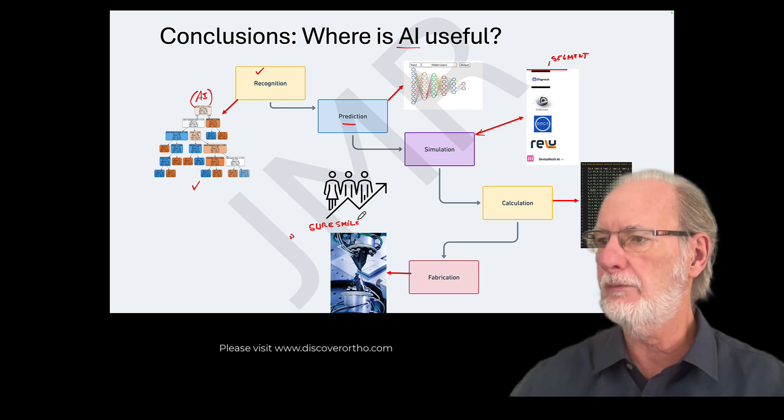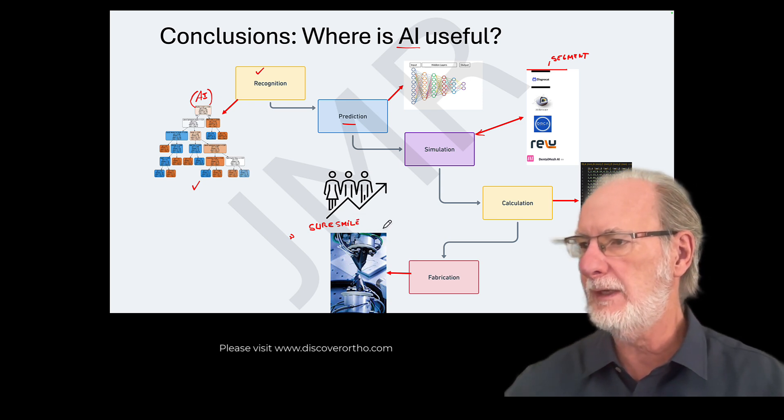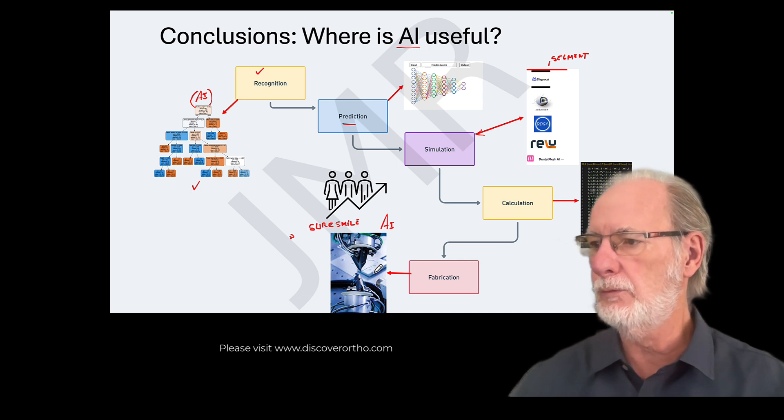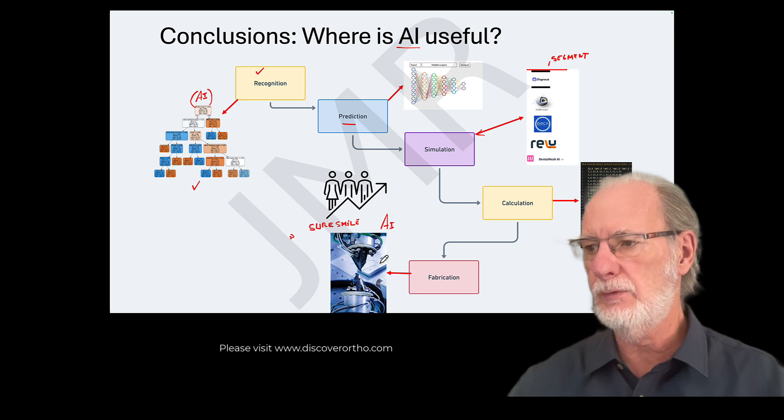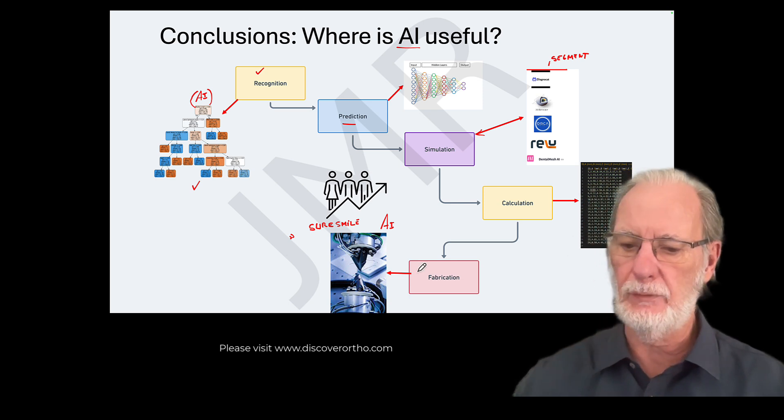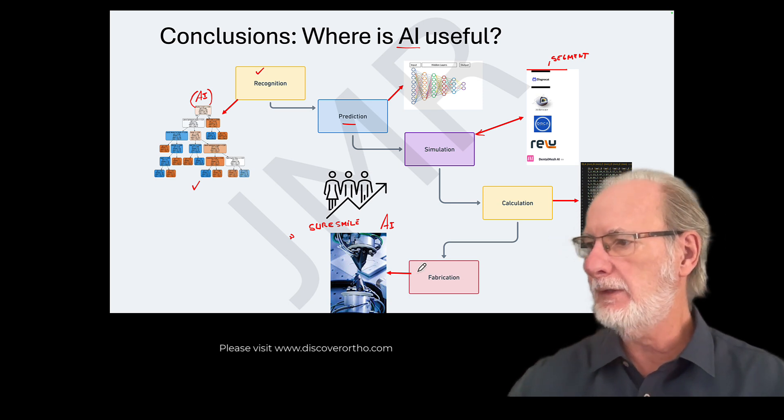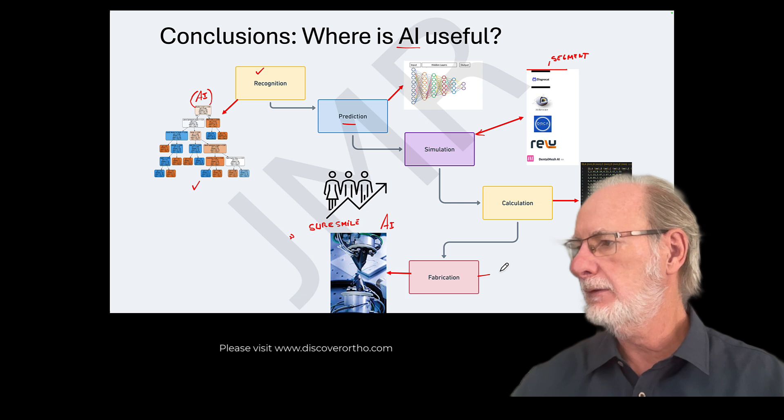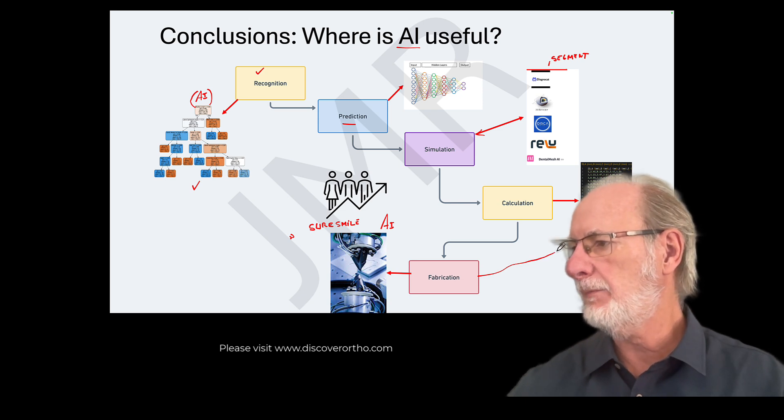But now we can use AI to direct this robot to bend specific wires. They don't have to be straight wire. They can be cantilevers. They can be anything. They can be segmented pieces that you want to use for aligners. When we use it's called a hybrid system. So we can fabricate nowadays through robots because you have the mathematic representation of the system right here.